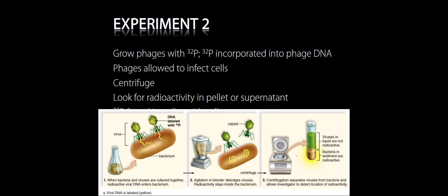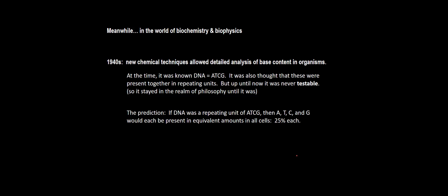This was early 1952 or so. In parallel to Hershey and Chase's work, there were new chemical techniques allowing much more detailed analysis of the bases within DNA from individual organisms. This is where Chargaff comes in. What he was able to do was purify DNA from different species and then isolate the A's, T's, C's, and G's, testing whether DNA was really these repeating units of ATCG or whether something else was going on.